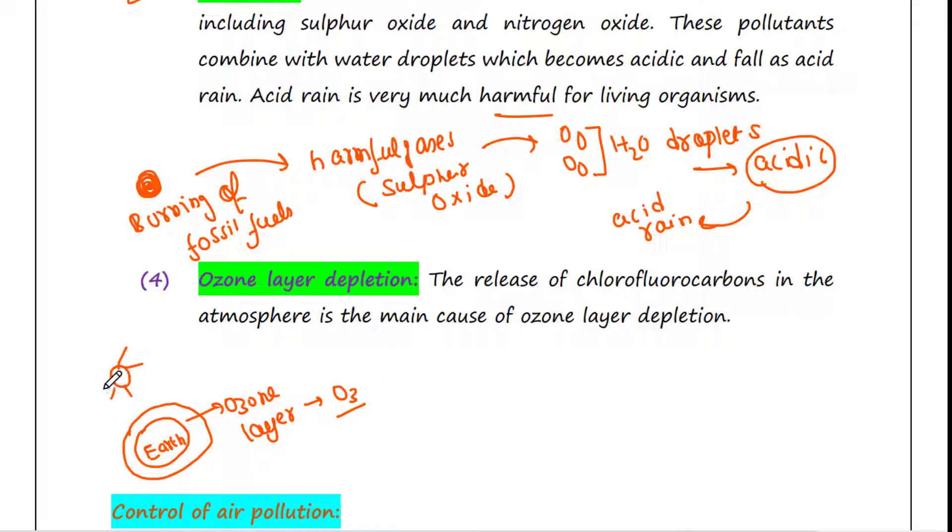This ozone layer absorbs UV radiation that is coming from the sun, and this UV radiation is actually very much harmful for us. So when ozone layer absorbs it, this UV cannot reach us.